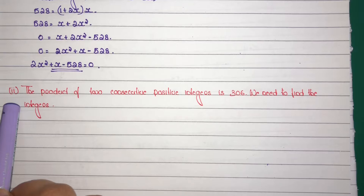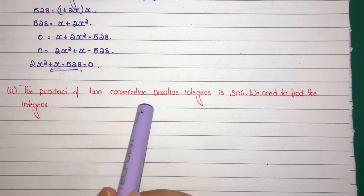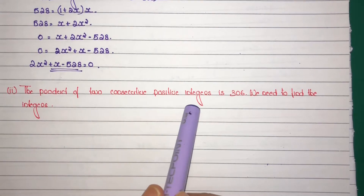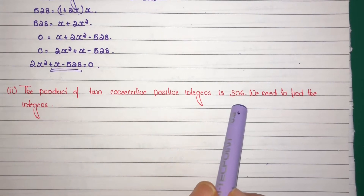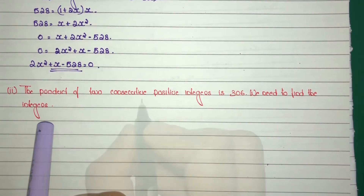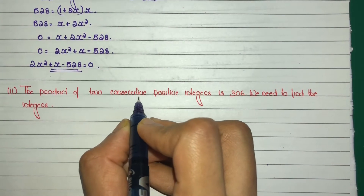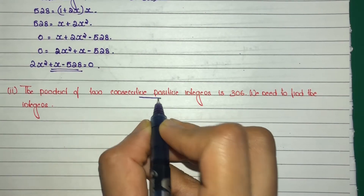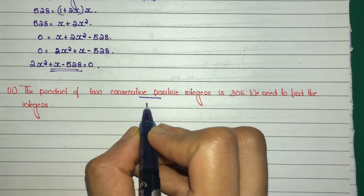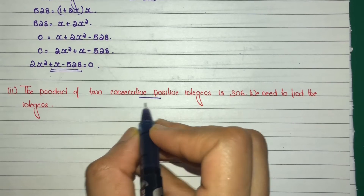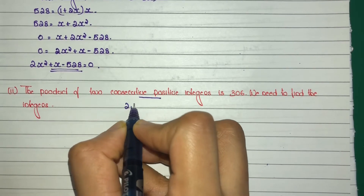Second question: the product of two consecutive positive integers is 306. We need to find the integers. Consecutive positive integers are numbers like 2 and 3.